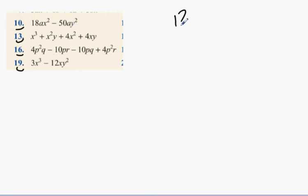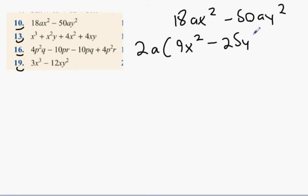Take question 10 as an example. What we're going to do is, I realize they both have A in it and they're both divisible by 2. So what can I do? 2A bracket what? 9X squared. Good job. Minus? 25Y squared. Excellent.